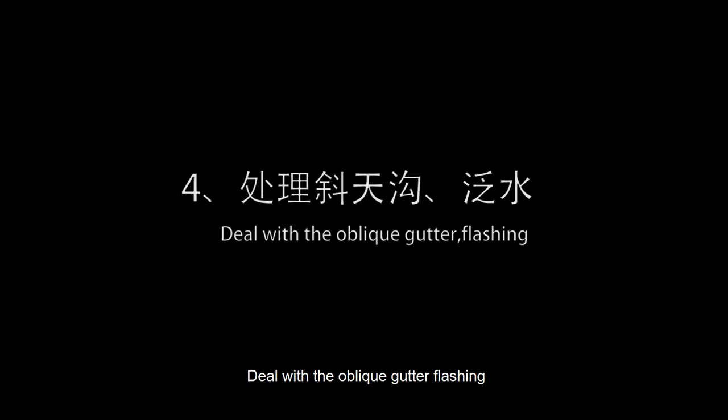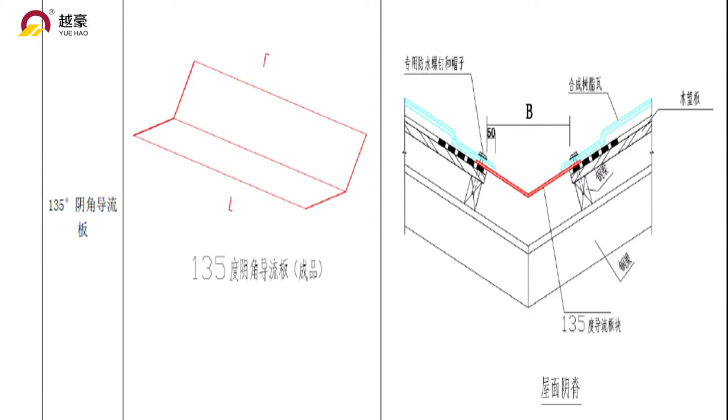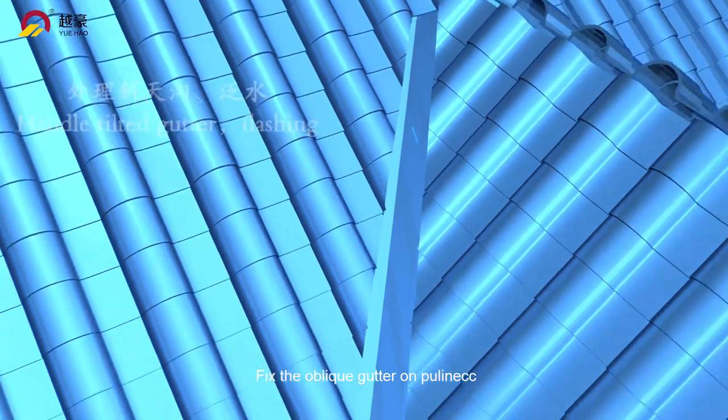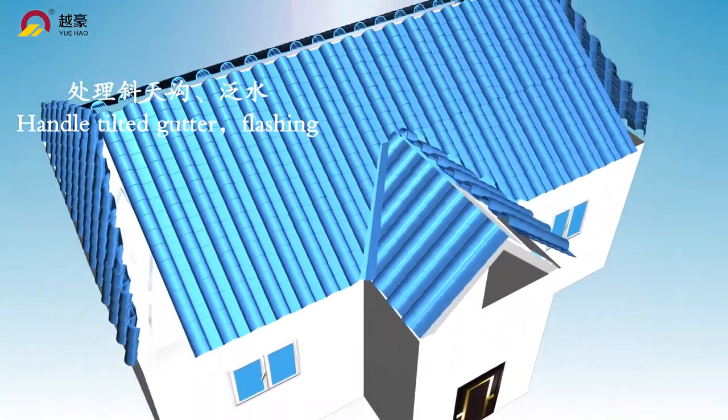Deal with the oblique gutter flashing: Gutter size is according to project building size at site. Fix the oblique gutter on the purline.